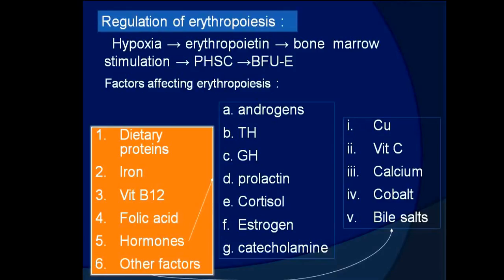Erythropoiesis is regulated mainly by hypoxia, which stimulates erythropoietin release. Erythropoietin stimulates bone marrow and leads to pluripotent hemopoietic stem cell formation and BFU-E. Factors affecting erythropoiesis include dietary proteins, iron, vitamin B12, folic acid, hormones (androgens, thyroid hormone, growth hormone, prolactin, cortisol, catecholamines), and other factors such as copper, vitamin C, calcium, cobalt, and bile salts.